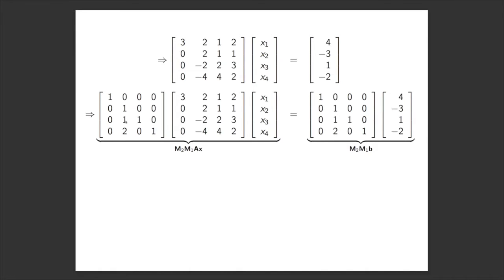So we add 1 times the second row to the third row and 2 times the second row to the fourth row. Again, we do the same to the right-hand side and multiplying that together, we've reduced the system forever.